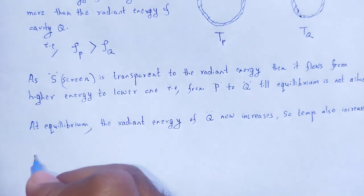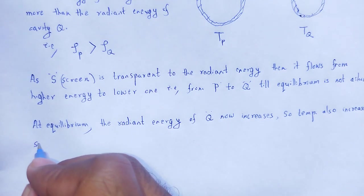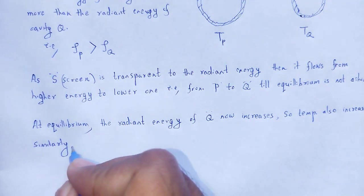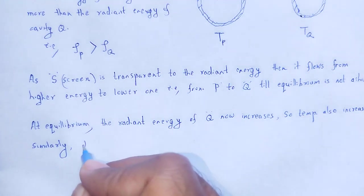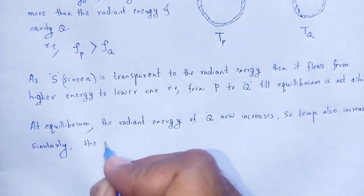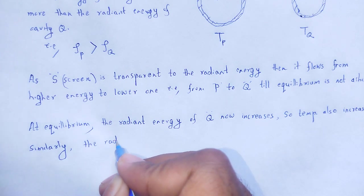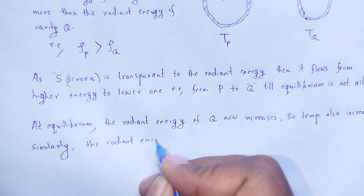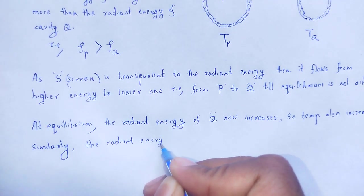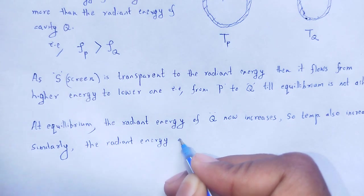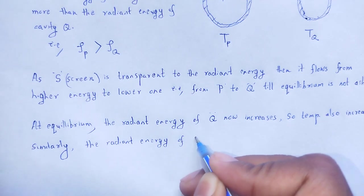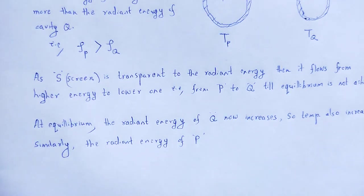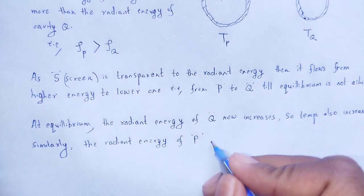Similarly, the radiant energy of cavity P decreases, which results in a lower temperature of cavity P.